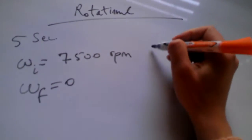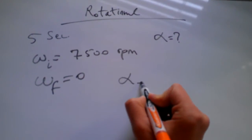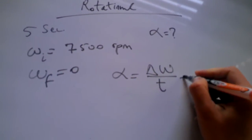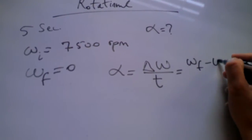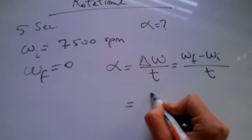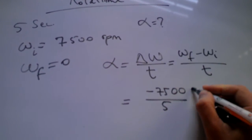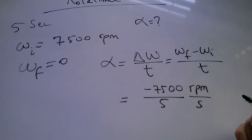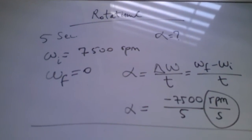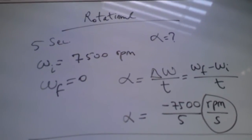What is the average rotational acceleration? So we are essentially solving for alpha, rotational acceleration, knowing that alpha is changing angular velocity over time. That gives me omega final minus omega initial over the time, and then that gives us essentially minus 7500 over 5 seconds. So this is revolutions per minute per second.